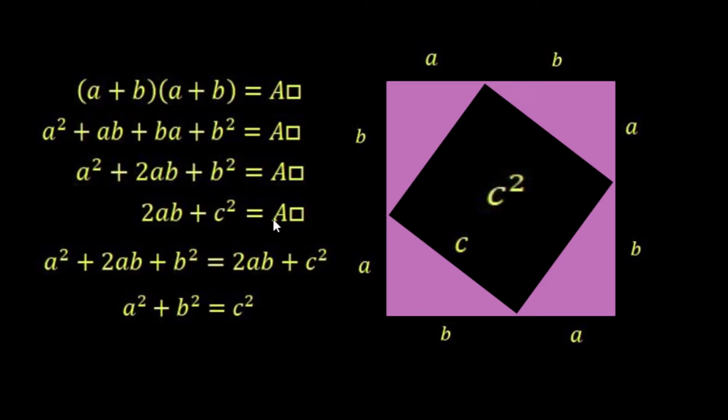Whenever we multiply these out we're going to get a² + 2ab + b² equals that area. Now we also said that we can look at the area of this large square here in terms of the area c², which is the black square here.